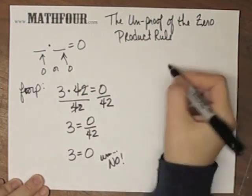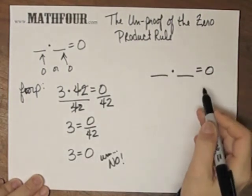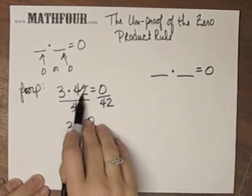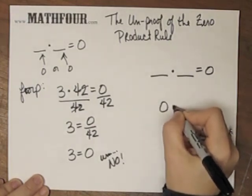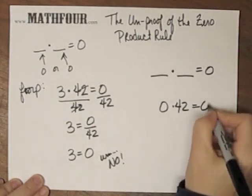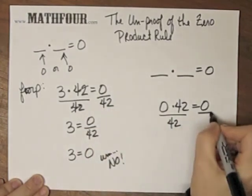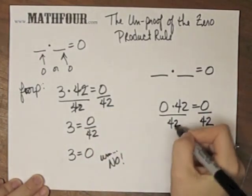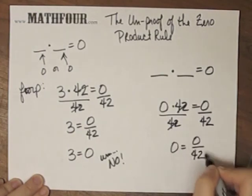which means that if two numbers are multiplied to give me zero, neither of them can be not zero. As a matter of fact, let's look at zero times 42 equals zero. Is that okay to do this game? If I divide both sides by 42, those cancel. So I have zero equals zero over 42, and that's okay.